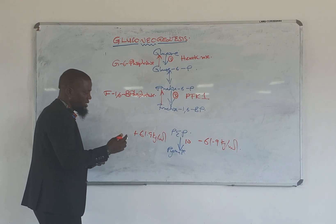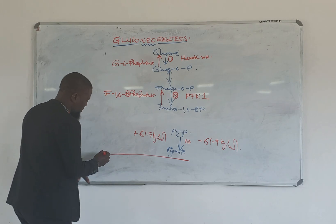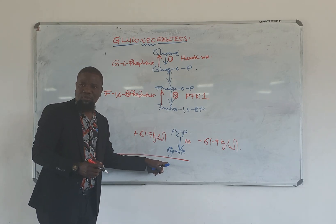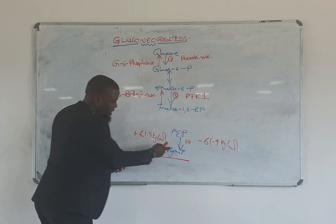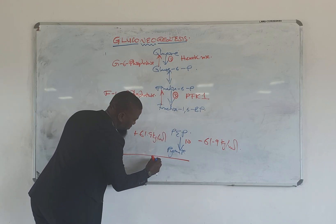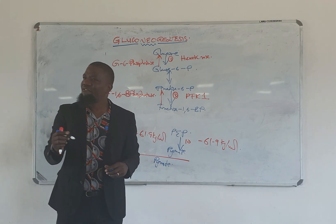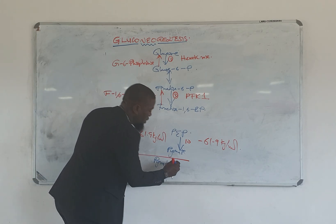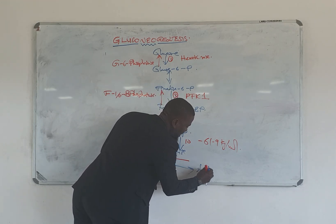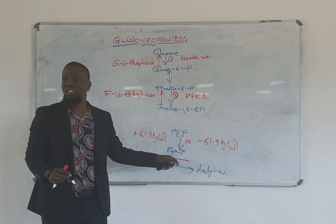The first thing is this: pyruvate is going to enter into the mitochondria, normally, with the help of the pyruvate transporter. So this pyruvate will become mitochondrial pyruvate. And we are very used to the reaction where pyruvate is converted into acetyl-CoA, which is used in the TCA cycle.